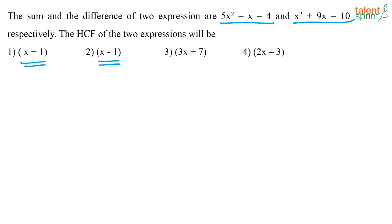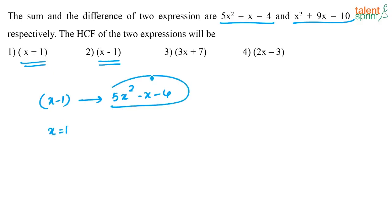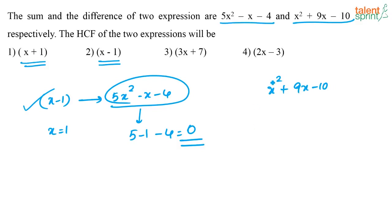To check whether x minus 1 is a factor of 5x squared minus x minus 4, put x equal to 1: you get 5 minus 1 minus 4, which equals 0. So x minus 1 is a factor of this expression. Similarly, check x squared plus 9x minus 10 by putting x equal to 1: you get 1 plus 9 minus 10, which again equals 0. So x minus 1 is a factor of both expressions. Checking all options this way, only x minus 1 satisfies both, so that must be the answer.